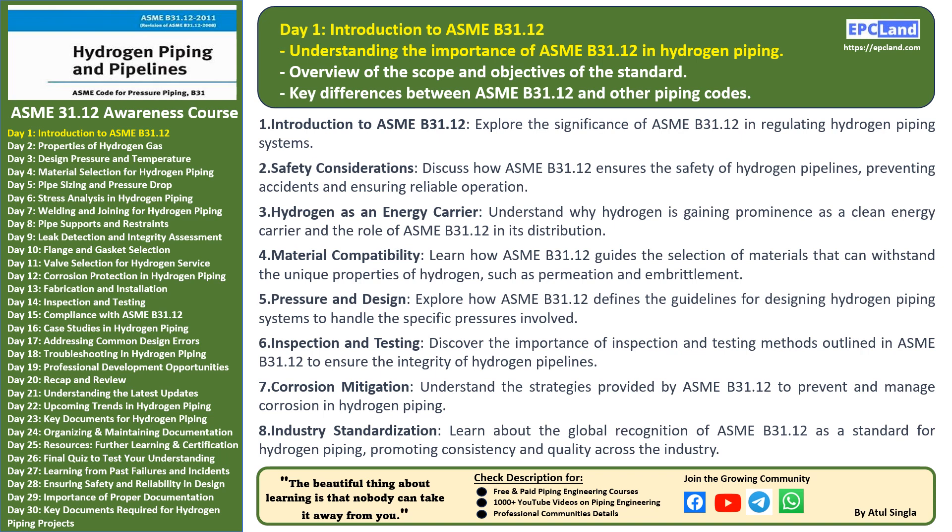The unique properties of hydrogen present challenges in terms of handling, distribution, and safety. This is where ASME B31.12 comes in. It provides a comprehensive framework for the design, construction, and operation of hydrogen piping systems, addressing safety considerations, material compatibility, pressure handling, inspection, and more. By adhering to this standard, we ensure that hydrogen pipelines are not only efficient but also safe. In our next topic we'll provide an overview of the scope and objectives of ASME B31.12, giving you a clear roadmap for the journey ahead.